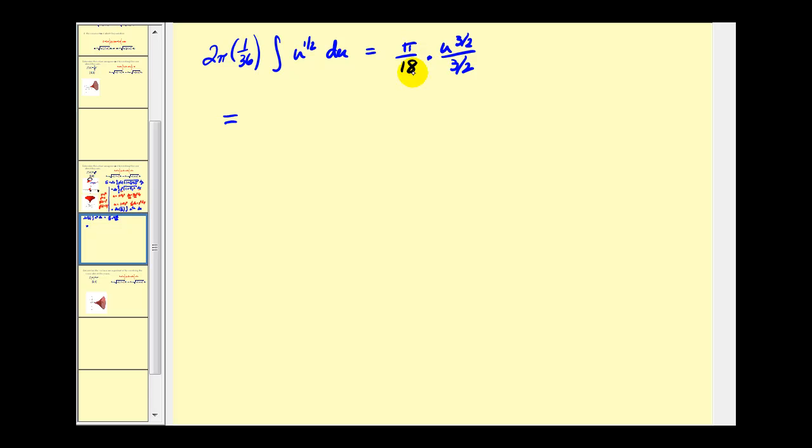Let's clean this up and rewrite in terms of y. We have π/18 times the reciprocal of 3/2, which is 2/3. So π/18 times 2/3 times u^(3/2), where u = 1 + 9y⁴, evaluated at the limits of two and zero. Cleaning this up: π/18 times 2/3 gives us π/27.